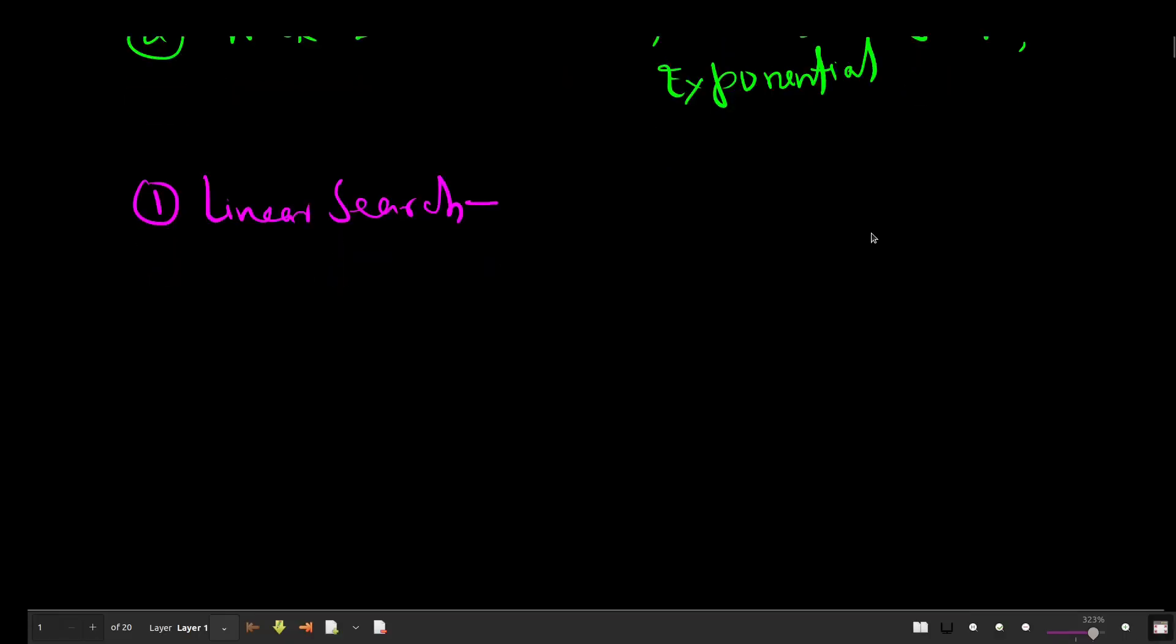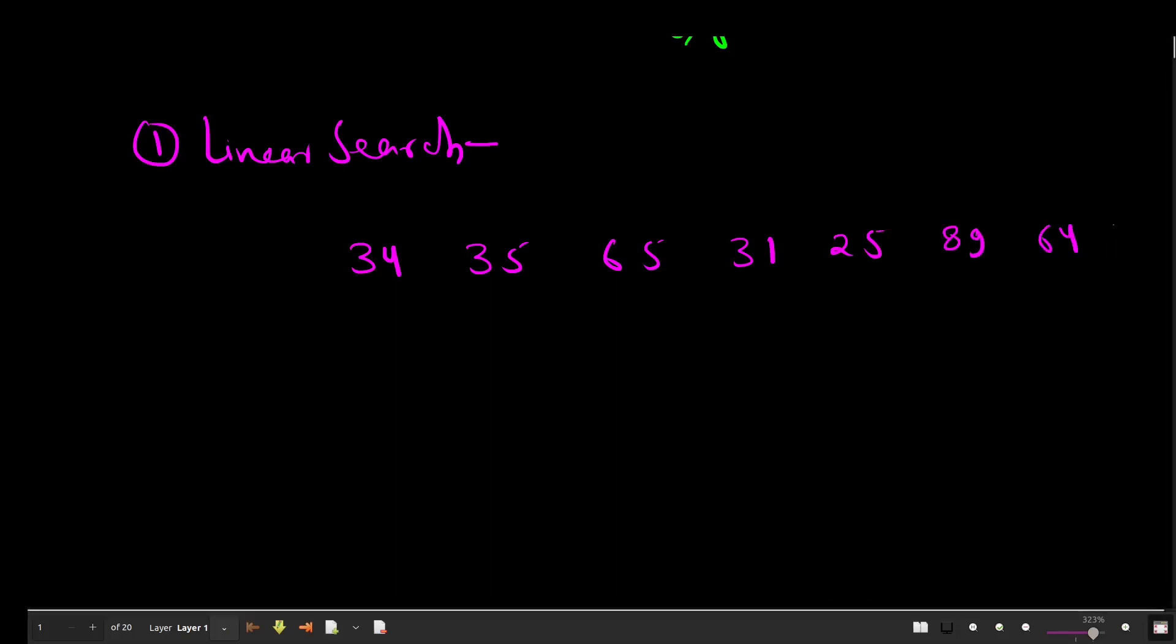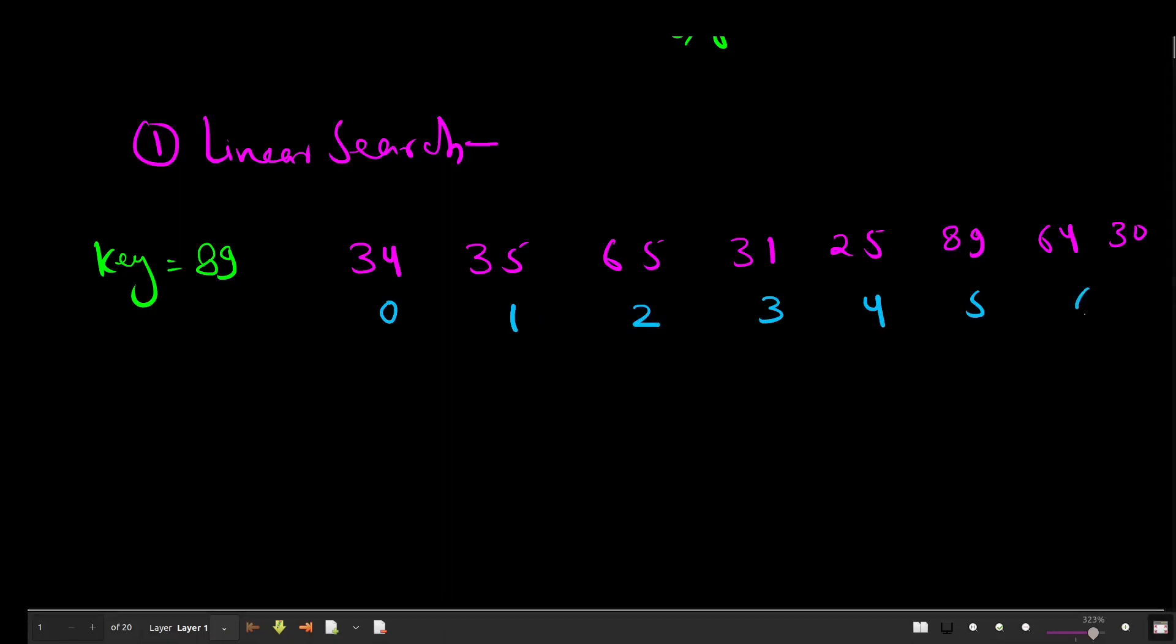Let me give you an example for this. For linear search just pick an array. I am picking our first test case: 34, 35, 65, 31, 25, 89, 64, and 30. What is the key element in this case? The key element is 89. Now also write their indexes: 0, 1, 2, 3, 4, 5, 6, and 7.